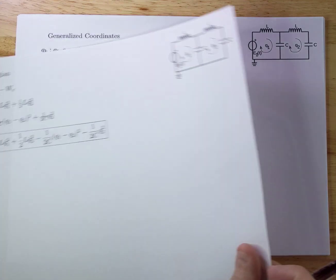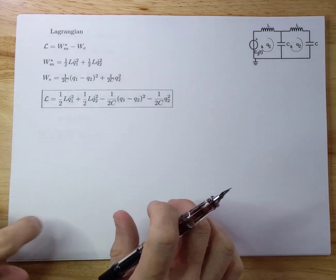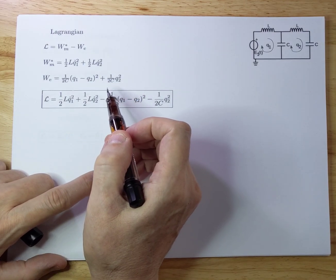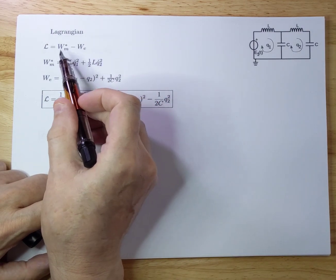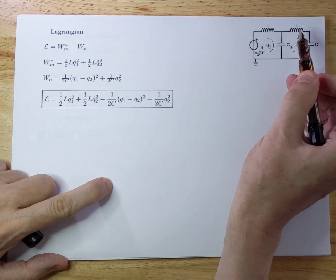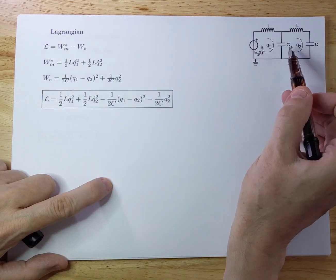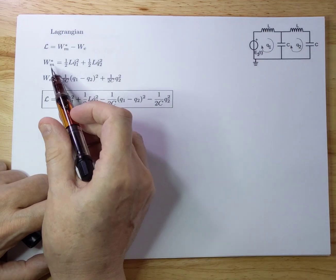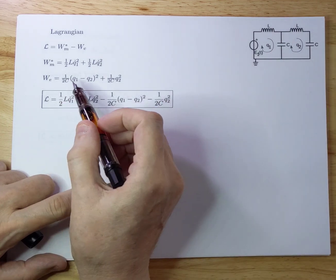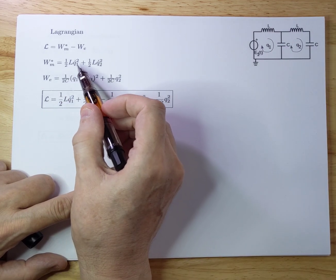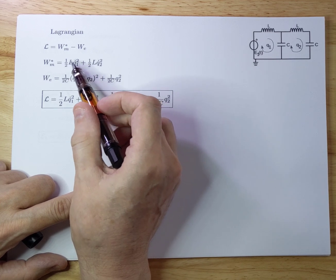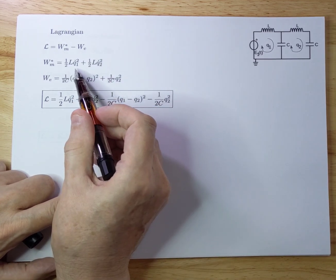Next step is to do the Lagrangian. As we know, Lagrangian is always kinetic energy minus potential energy. And this is how you can look at it here, too. We have the energy in the inductances, and we have the energy in the capacitors. Let's first start with the ones in the inductors, in the Ls. That's a half times L times Q1 dot squared. It's almost like half Mv squared. You can look at it as kinetic energy, for instance. And that's what you do here, too.